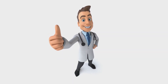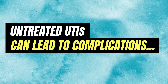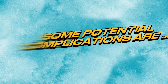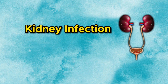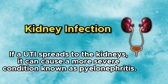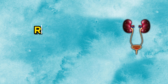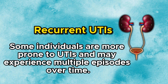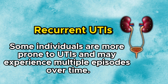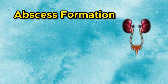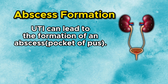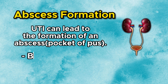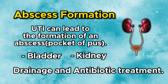Urinary tract infections are typically not serious when treated promptly, but if left untreated or if the infection spreads, they can lead to various complications. Some potential complications include kidney infection — if a UTI spreads to the kidneys, it can cause a more severe condition known as pyelonephritis. Recurrent UTIs — some individuals are more prone to UTIs and may experience multiple episodes over time. Abscess formation — in some cases, a UTI can lead to the formation of an abscess, which is a pocket of pus, occurring in the bladder or kidney and may require drainage and antibiotic treatment.